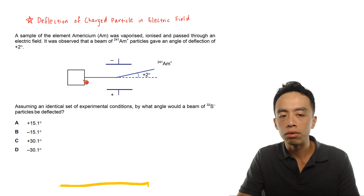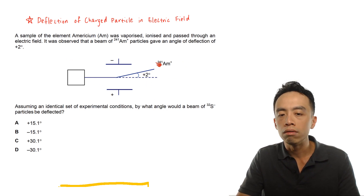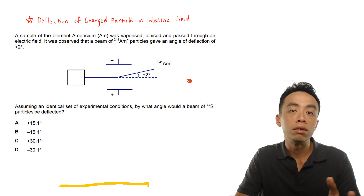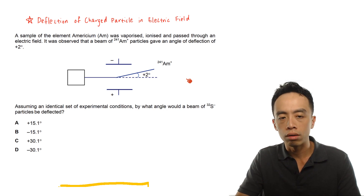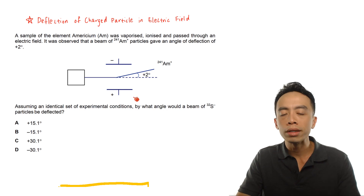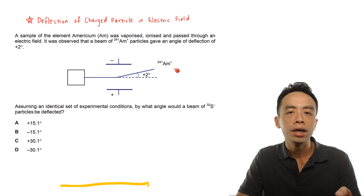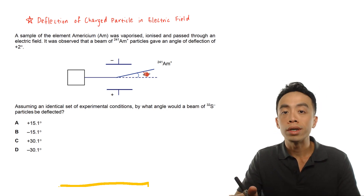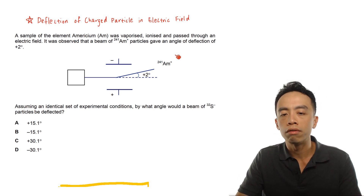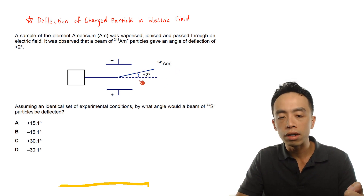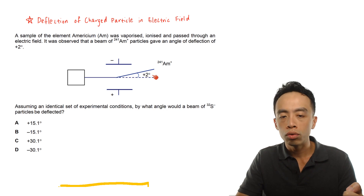The deflection is reflected in this diagram here. A beam of charged particles involving Am+ is passed through an electric field and will be deflected depending on the charge. The electrode on top is negative and the electrode at the bottom is positive. Since Am+ is positively charged, it will be deflected towards the negative electrode, giving an angle of deflection of plus 2 degrees.